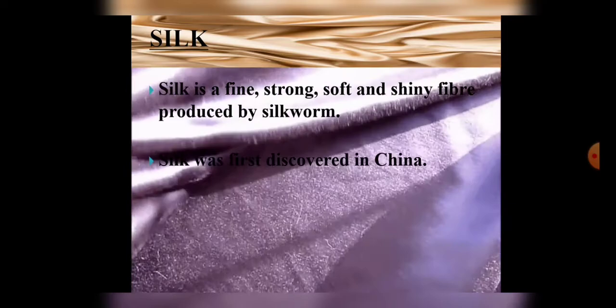Students, look at this clip. You can see a shiny and beautiful fabric. This fabric is silk, which is fine, soft and strong, and is obtained from the silkworm. It was first discovered in China and used to be worn by Chinese emperor families.